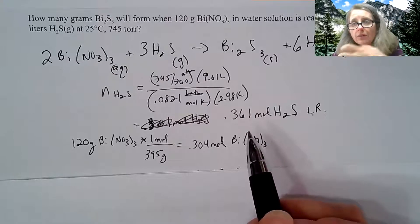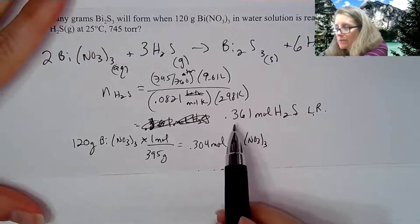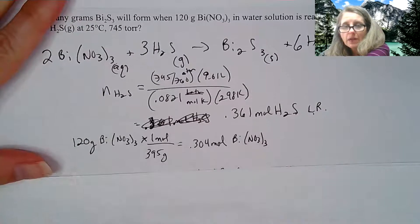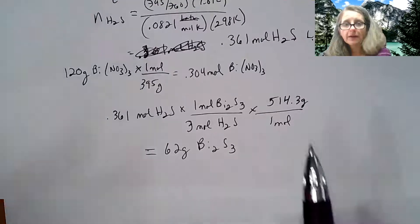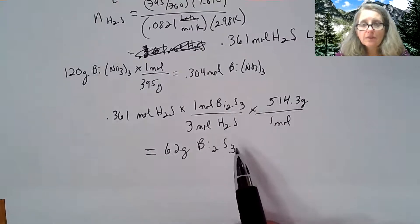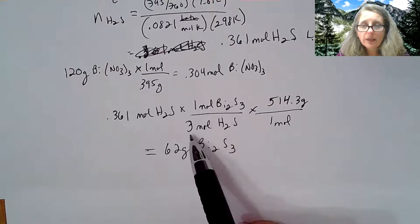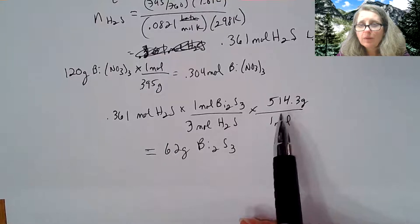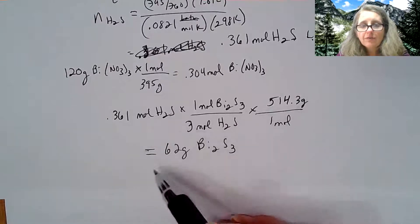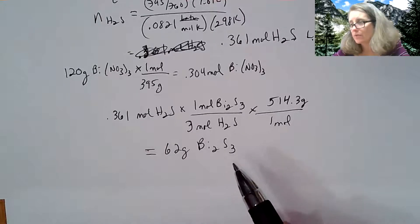This is another good example of a stoichiometry problem with gas laws. I have to take the moles of my limiting reagent and find my product. They want to find Bi2S3 as the product. I go back to my balanced chemical equation. It's a 1 to 3 relationship, and the molar mass is about 514.3 grams per mole. So my final answer is about 62 grams of Bi2S3.